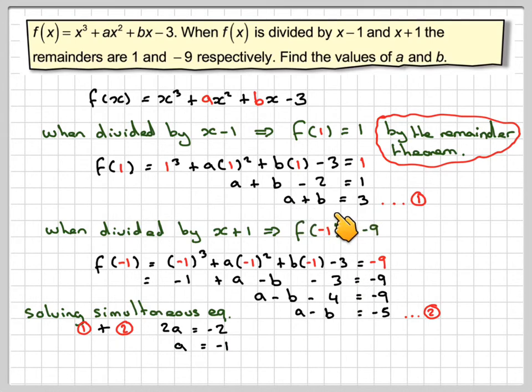We now substitute that into equation 1. We're going to get minus 1 plus b equals 3, which gives me b equals 4. So we're going to have a equals minus 1 and b equals 4.